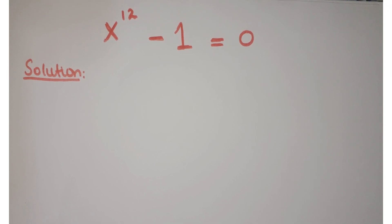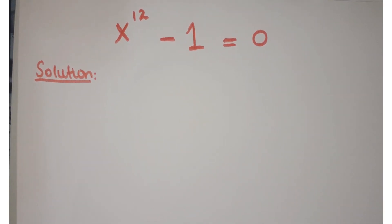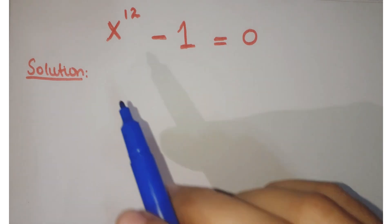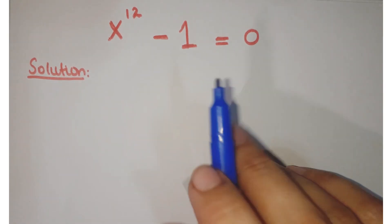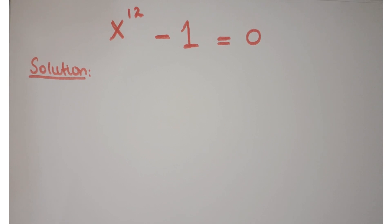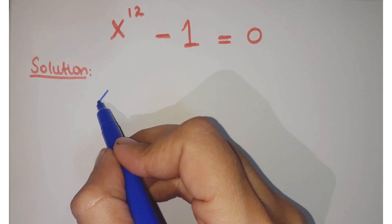Hello friends, welcome to the Learning Curve. Now look at this exponential equation: x to the power 12 minus 1 equals 0, and we have to find all possible solutions of x. Let's see how we proceed with this question.